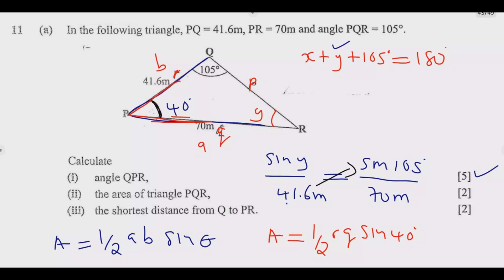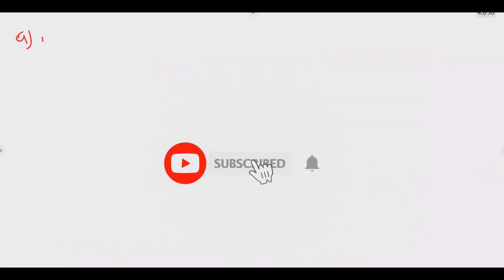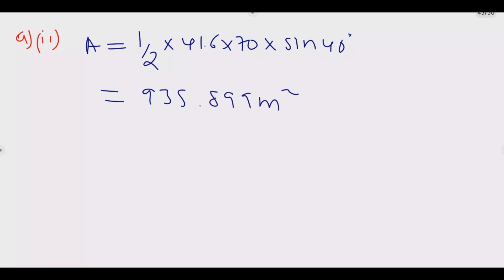R is 41.6, Q is 70, and the angle is 40 degrees. So area equals half multiplied by 41.6 multiplied by 70 multiplied by sine 40 degrees. Using our calculator, area equals 935.899 meters squared. To three significant figures, we have 936 meters squared as the answer.